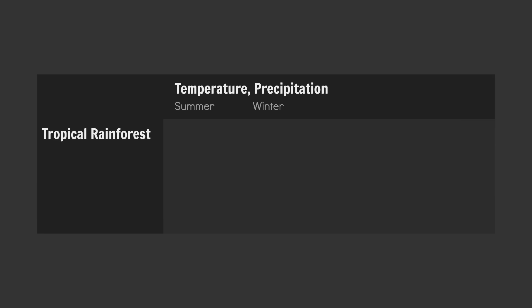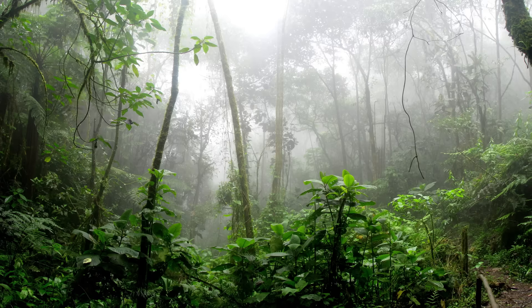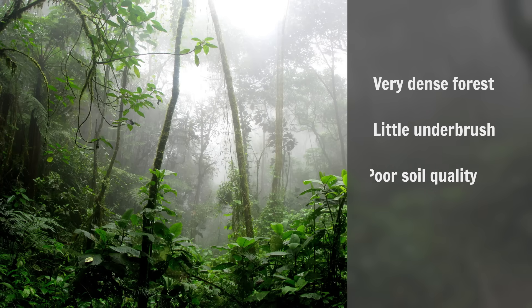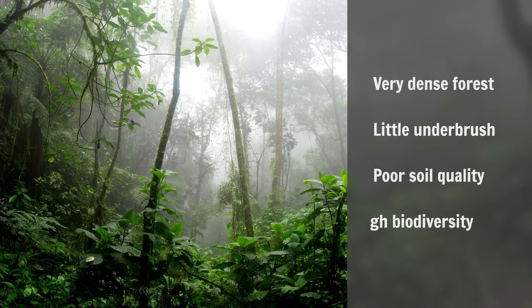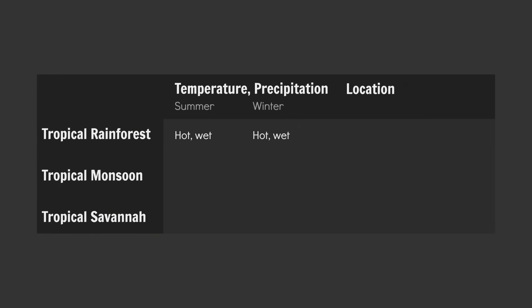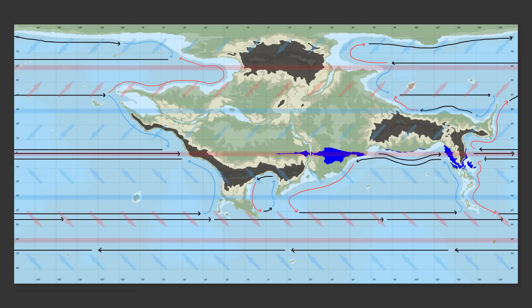Tropical rainforest climates are hot and wet year round — think the Amazon. Very dense forest, little underbrush, poor soil quality, and very high biodiversity. Place your rainforests in your low-lying areas between about 0 and 10 degrees north and south, like so.